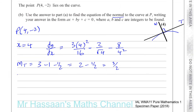Therefore the gradient of the normal is minus 2/3. The normal is perpendicular to the tangent, so the gradient of the normal is the negative reciprocal of the tangent's gradient — you flip the fraction and change the sign. So 3/2 becomes minus 2/3.